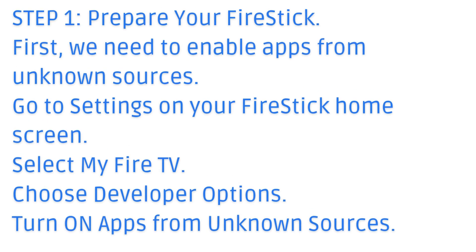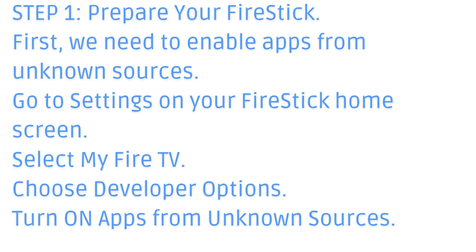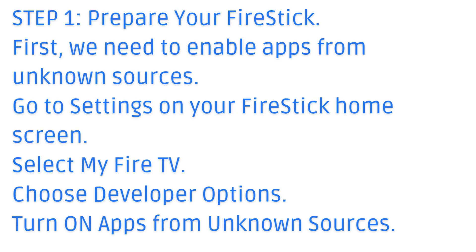Step 1: Prepare your Fire Stick. First, we need to enable apps from unknown sources. Go to Settings on your Fire Stick home screen, select My Fire TV, choose Developer Options, and turn on apps from unknown sources.